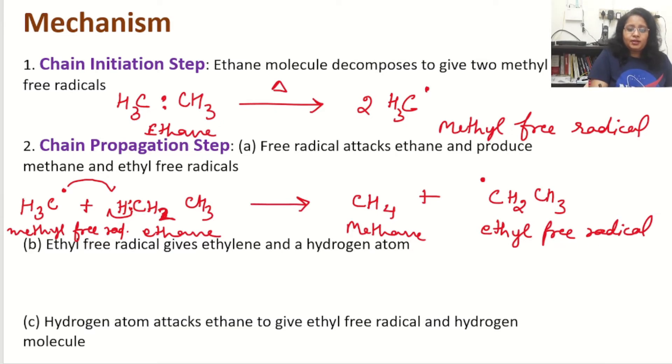Now the next step in the chain propagation is ethyl free radical. What is formed in step one gives ethylene and hydrogen. Now this ethyl free radical CH2 with free electron and CH3, it will give us CH2 double bond CH2. This is ethylene plus hydrogen, H free radical.